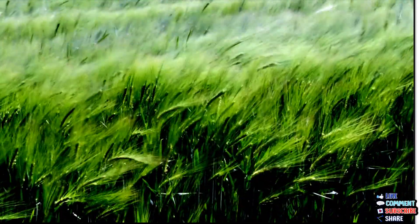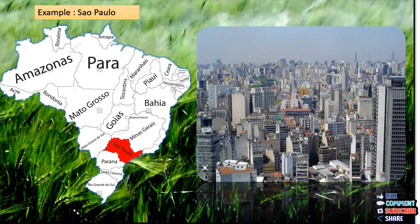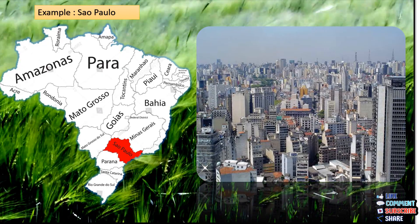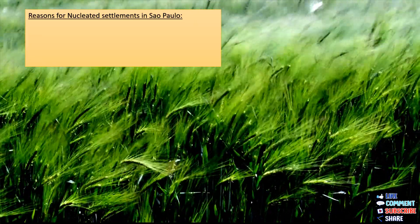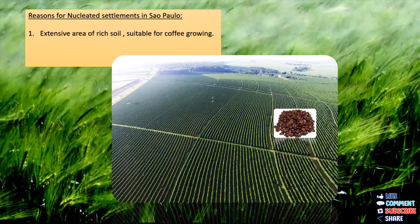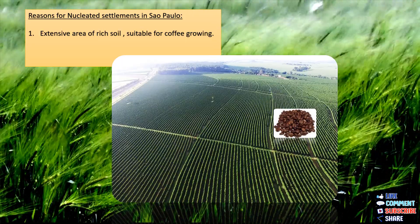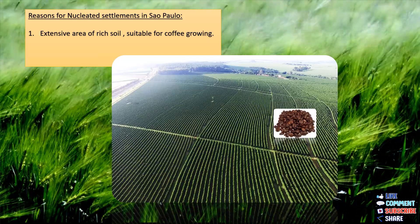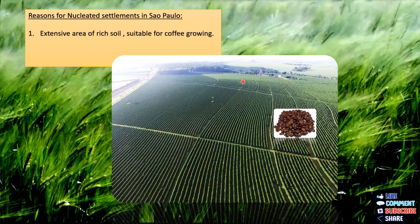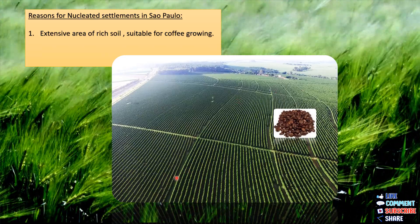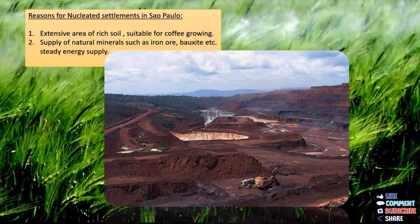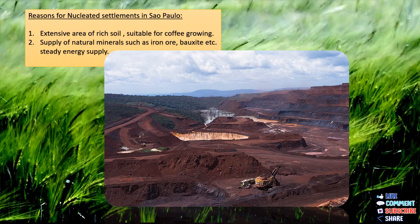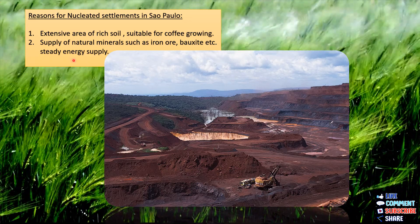São Paulo is the best example of dense population. It shows nucleated types of settlements and is a region which has good water supply and natural resources. The first reason for nucleated settlement in São Paulo is its extensive area of rich soil, which is very well suited for coffee growing — we see large cultivation of coffee here. The second reason is the supply of natural minerals such as iron ore and bauxite, and a steady energy supply, meaning there is no shortage of electricity.